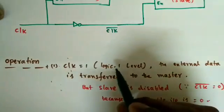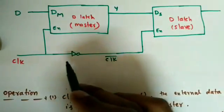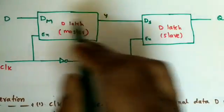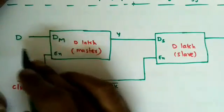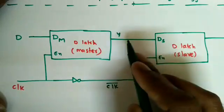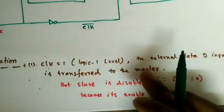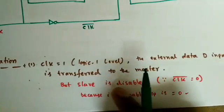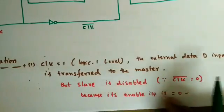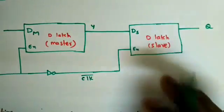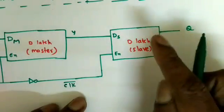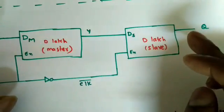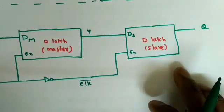When clock equals 1: logic 1 goes to the master's enable, and 1-bar means 0 goes to the slave's enable — so the slave is disabled and the master is enabled. The external data D input is transferred to the master output Y. The slave is disabled because its enable input (clock-bar) is zero. So when clock is 1, whatever input comes is stored in the master, but the final output Q is not changing.